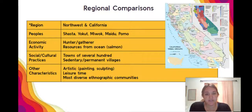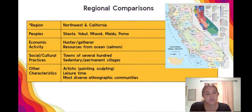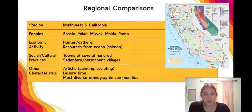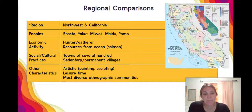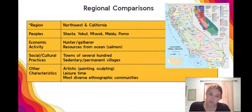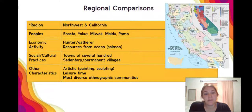Our last region is the Northwest and California, where we see the most diverse ethnographic communities — so many different peoples lived in this region. For many of them, especially those along the coast, there were abundant natural resources: salmon, fish, berries, and many things that made eating fairly dependable. What that allowed was a larger amount of leisure time, so we see a lot of sculpting, painting, and bead work coming from this region. Areas with a less dependable food source and more time spent obtaining food would not have had the same type of leisure time.